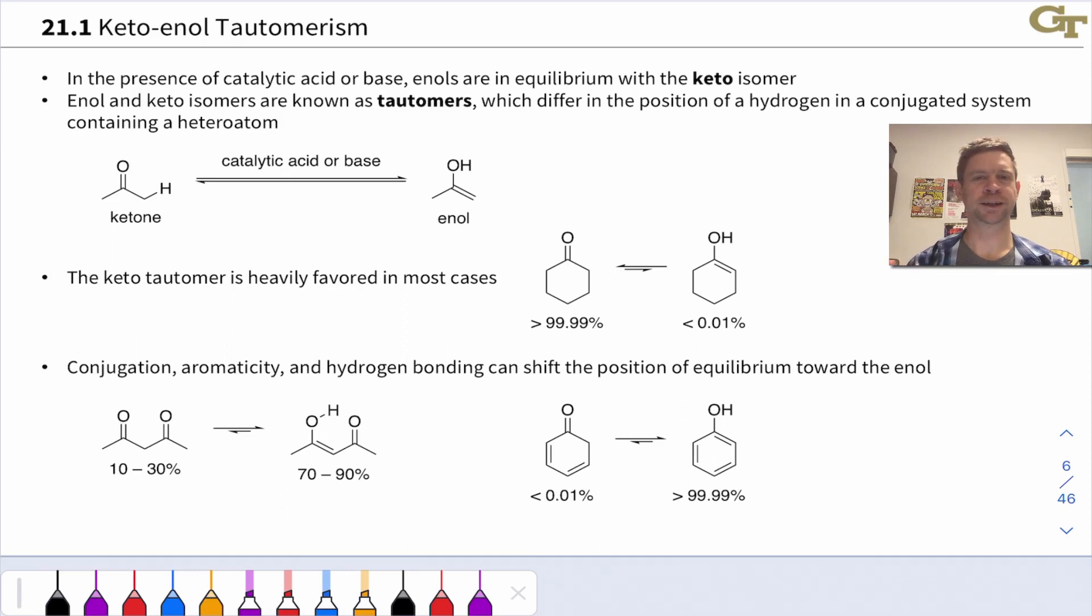We're most accustomed to thinking about carbonyl compounds in their keto form with the C=O double bond, and this is true of carboxylic acid derivatives, ketones, and aldehydes.